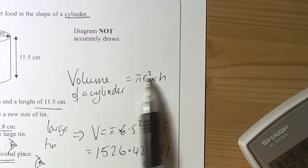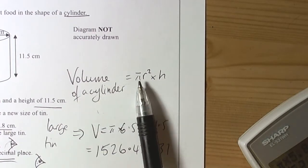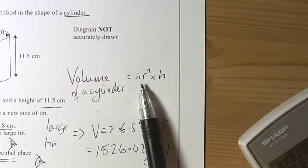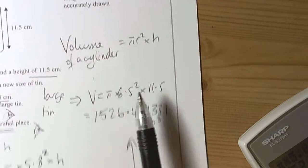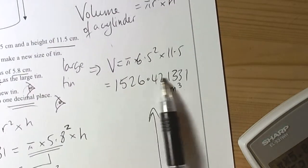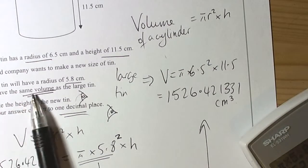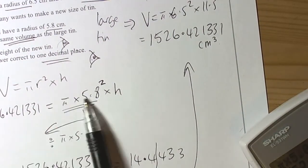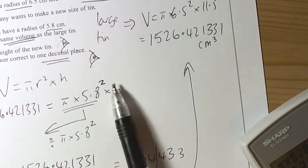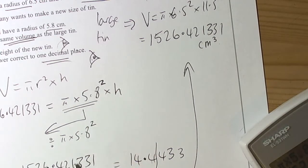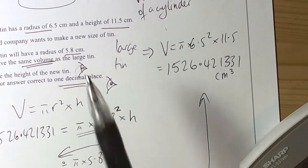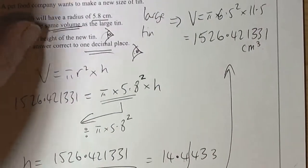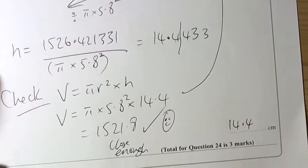So again, learn your formulas. Volume of the cylinder is a prism, so the cross section area was a circle times the height of the shape. Put your numbers in, find out the volume. Recognize the key information tells us the new tin has the same volume. Write the formula, put in the numbers you know, rearrange it, remembering that it was r squared. Do the sums, get the answer, round because the question says to do one decimal place. So that's an example of how to work with the volume of the cylinder.